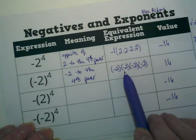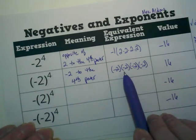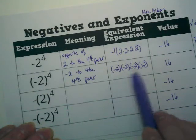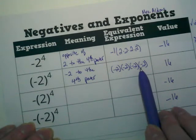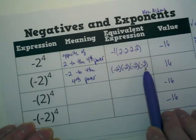The negative is with the 2 inside the parentheses, so when I multiply them to the fourth power, it's 4 negative 2s being multiplied. Negative 2 times negative 2 is positive 4. Positive 4 times negative 2 is negative 8. Negative 8 times negative 2 is positive 16. Do you see what's happening with the rules there?